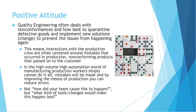Positive attitude. Quality engineering often deals with non-conformances and how best to quarantine defective goods and implement new solutions — which is change — to prevent those non-conformances from occurring again in the future, or at least reduce how often they occur. So this means your interactions with the production team are often centered around mistakes. That's why you're there in the first place, because production allowed a non-conforming part to get through to the customer, and the customer noticed. But in today's world of high-volume, high-automation manufacturing, production workers simply can't do it all. Everybody's human. Mistakes will be made, and by improving the means of production, you can reduce errors. It's not always a person's fault.